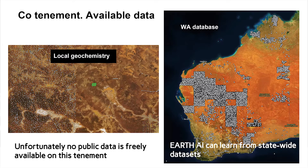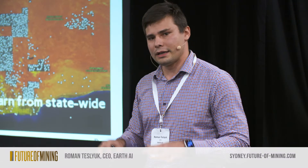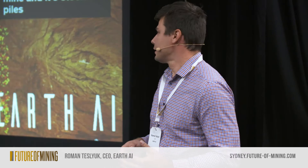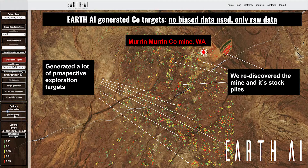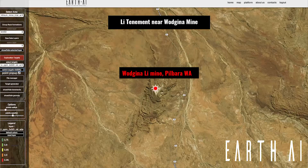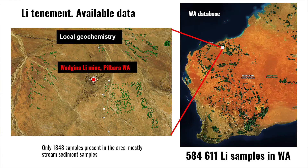The Robin Hood principle: if you have your tenements over the mine area, there's very little public domain data to help you find where to look. But across the whole state there are data-rich regions — Earth AI learns on those, picks up the signature associated with high-cobalt ore bodies, and predicts into your area. Our predictions highlight the stockpile, highlight open pits, and generate expression targets with a similar signature that haven't necessarily been discovered before.